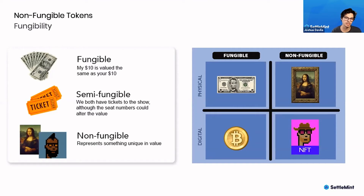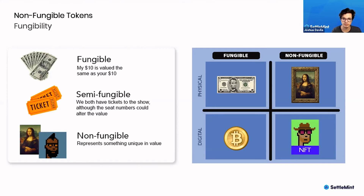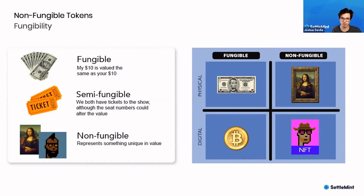In terms of non-fungibility, this is when you're looking at something that represents something unique in value. So even though there may be millions of different printouts of the Mona Lisa, there's still only one originally painted Mona Lisa, which is held in a museum and is probably worth a lot of money.